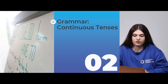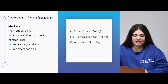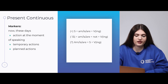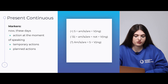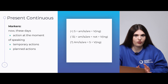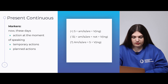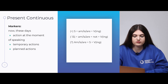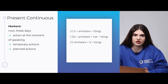Now we can continue with our grammar part. Today, as I mentioned, we're going to discuss continuous tenses. The first and simplest is present continuous. Its markers are 'now' or 'these days.' We use it to show an action at the moment of speaking, or temporary or planned actions. The structure is: subject first, then the verb 'to be' — I am, he or she is, we are — then the verb with the ending '-ing' to show that the action is in progress.